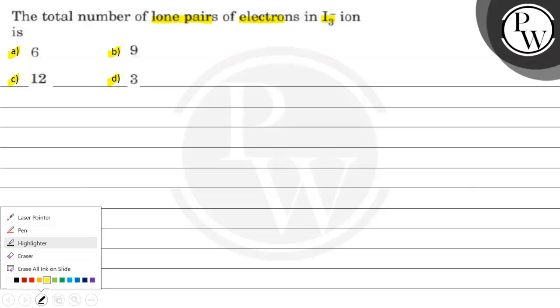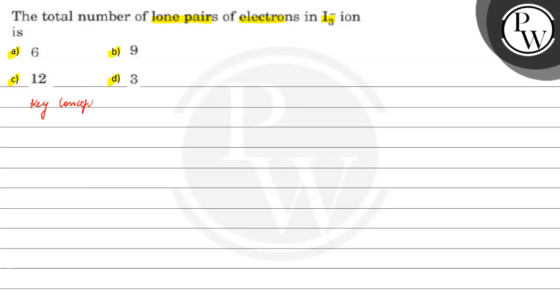Before starting this question, let's see what is the key concept. To calculate the number of lone pairs in any given compound, we should know its structure.